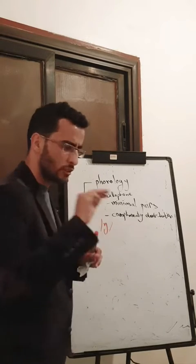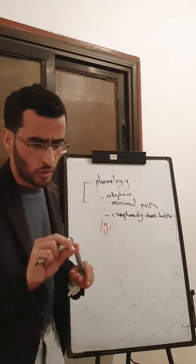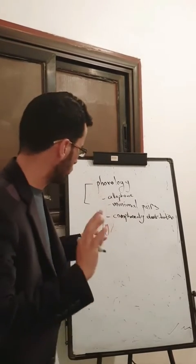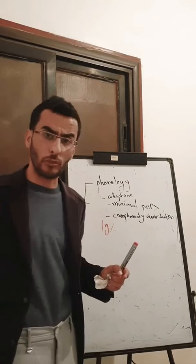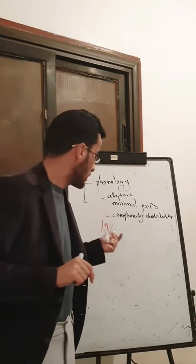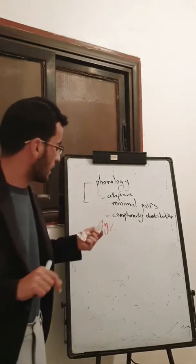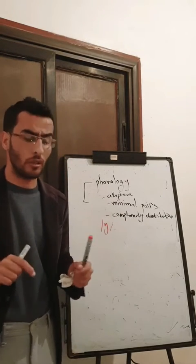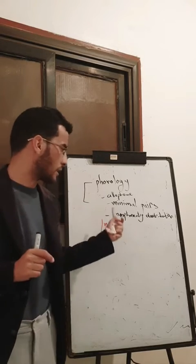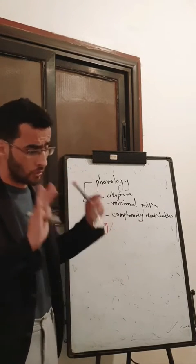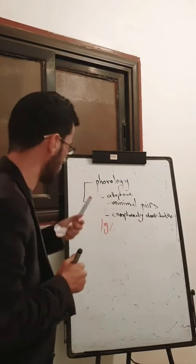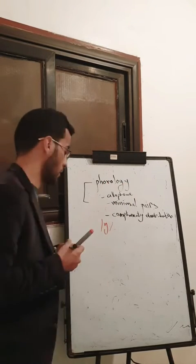It has different positions. It can be placed in some positions, but there are specific positions that cannot be filled. For example, you cannot find this phoneme in the initial or in the beginning of a word — no way. It means that it has a Complementary Distribution: specific places to stay in, in English, for example.